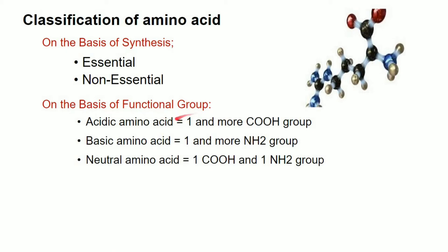Next, we classify amino acids by functional group. The functional groups are: acidic amino group, basic amino group, and neutral amino group. Acidic amino group has more carboxyl groups. Basic amino group has more amino groups. Neutral amino group has one carboxyl and one amino group — that is neutral.